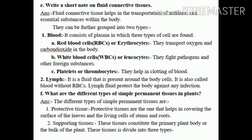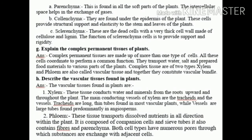Number 8f: What are the different types of simple permanent tissues in plants? Answer: The different types of simple permanent tissues are: number one, protective tissue — these help in covering the surface of the leaves and the living cells of the stem and roots. Number two, supporting tissues — these constitute the primary plant body or the bulk of the plants. This tissue is divided into three types. Number a: Parenchyma — found in all soft parts of plants; the intercellular space helps in the exchange of gases.